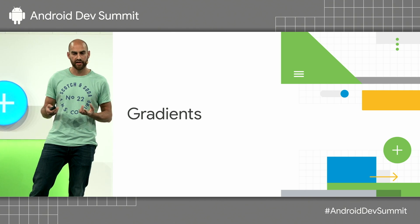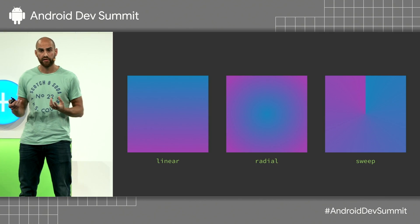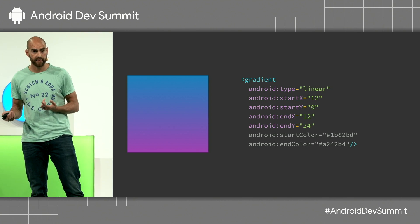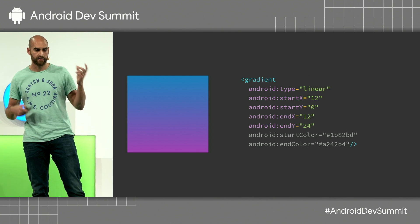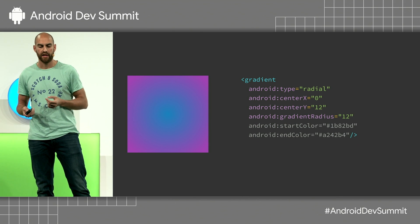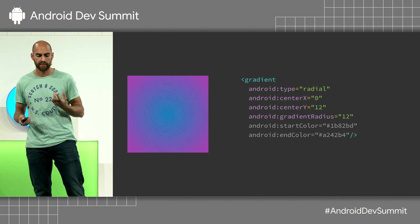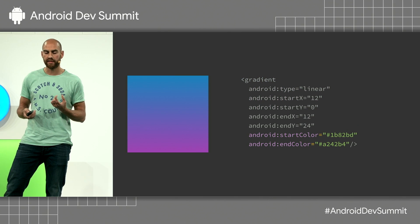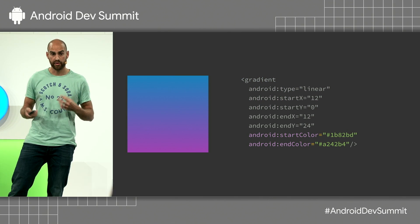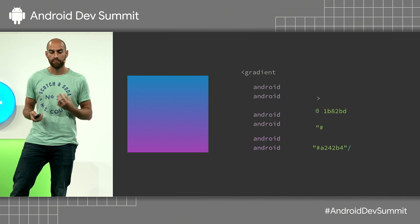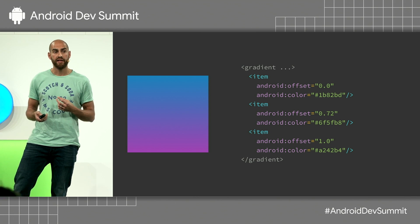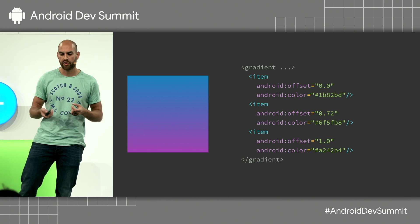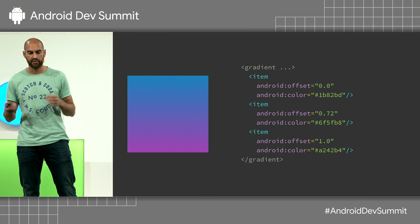And last, my favorite feature, is gradients. Vectors support three different types of gradients: linear, radial, and sweep, which you define like this. A linear gradient has start and end x-y coordinates. A radial has a center and a radius. And a sweep just has a center point. I've been using the shorthand of start, end, or center colors to define gradients, but you can actually get much more fine-grained and embed item tags inside it to define individual color stops. Here I'm going for a specific color at 72% of the way through.